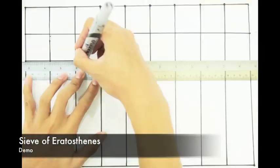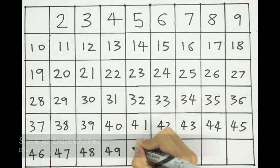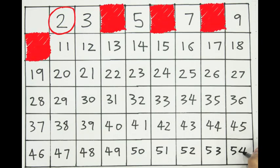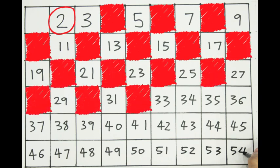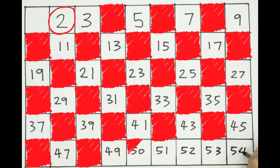First, we draw a grid and fill them with numbers from 2 to 54. Then, beginning with the number 2, we cross out every multiple of that number. 4, 6, 8, 10, all the way up to 54.